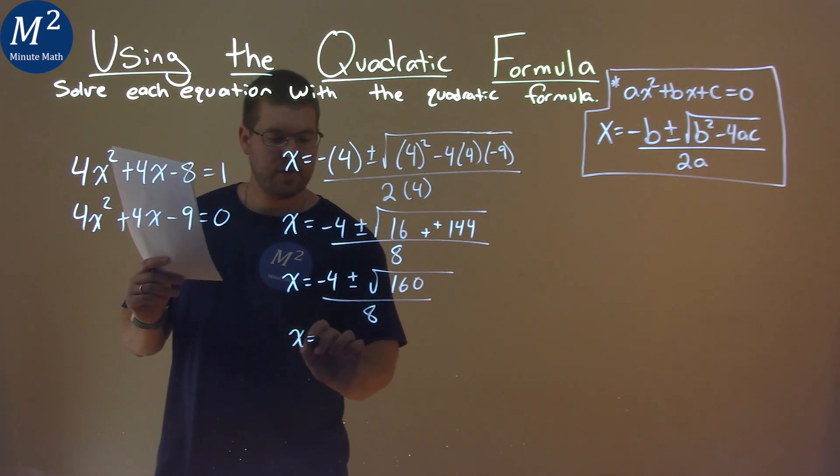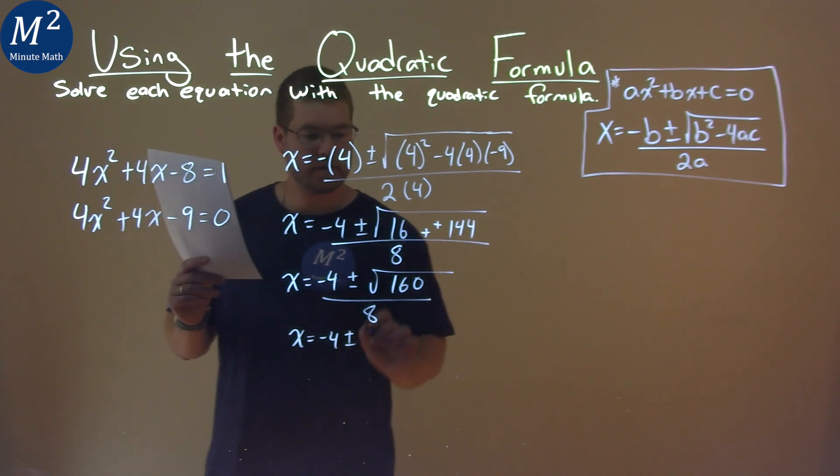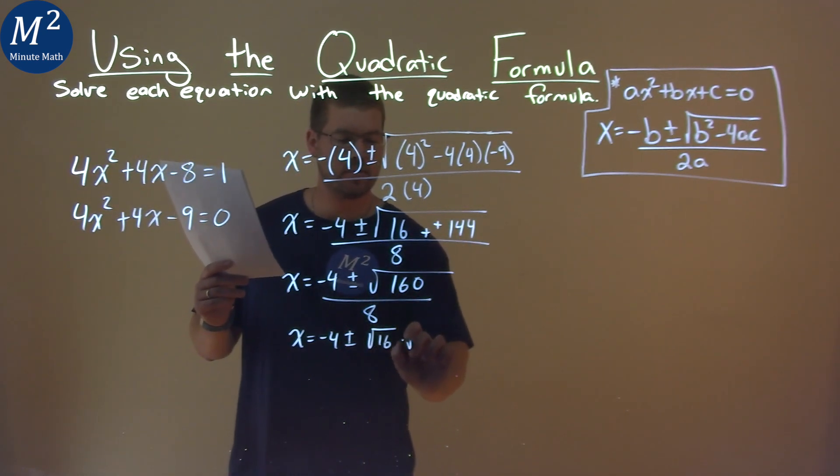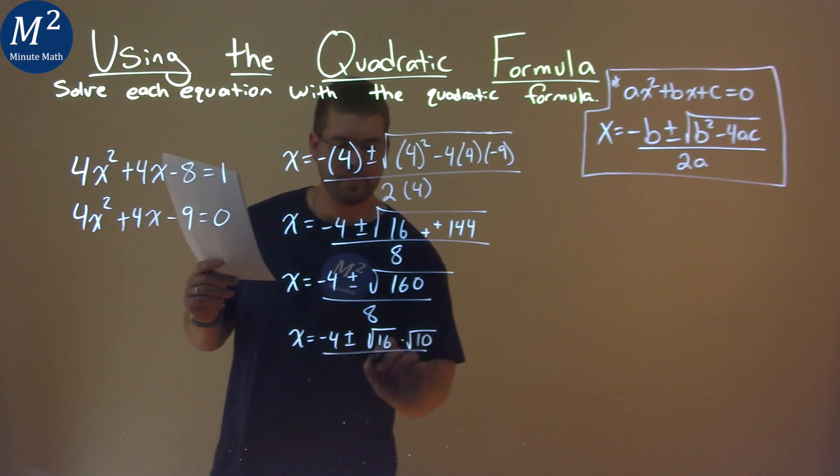Keep on going, x equals negative 4 plus or minus, and the square root of 160 can be broken down to be the square root of 16 times the square root of 10, over 8.